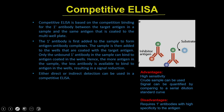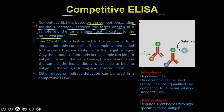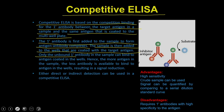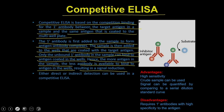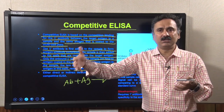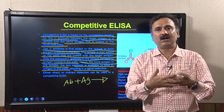Now, the competitive ELISA. Competitive ELISA is based on competition binding for the primary antibody between the target antigen in a sample and the same antigen coated onto the multiwell plate. The primary antibody is first added to the sample to form antigen-antibody complexes. The sample is then added to wells coated with the target antigen, and only unbound primary antibody can bind to the coated antigen.